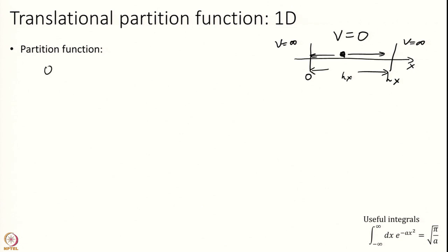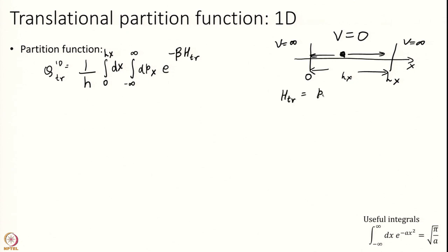Looking at the definition of the partition function in 1D, this will be 1 over h times the integral over dx from 0 to Lx — the particle cannot be found outside at all, so I do not have to worry about positions outside. Momentum can be anything. This gives e to the power of minus beta H_translation. But the Hamiltonian is p squared over 2m plus the potential, and the potential is 0 inside, so this becomes e to the power of minus p_x squared over 2m. That is why I integrate position only from 0 to Lx.